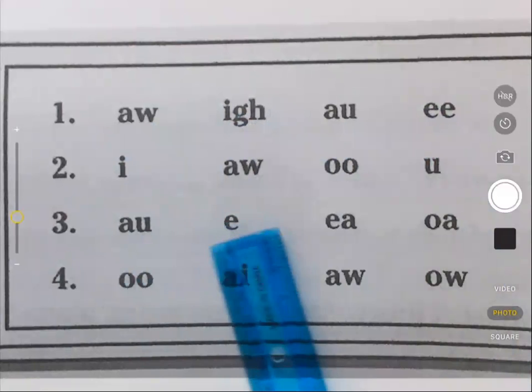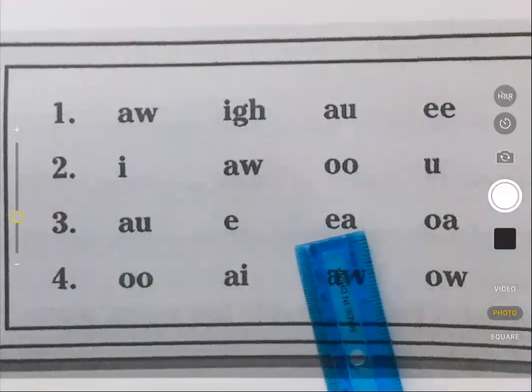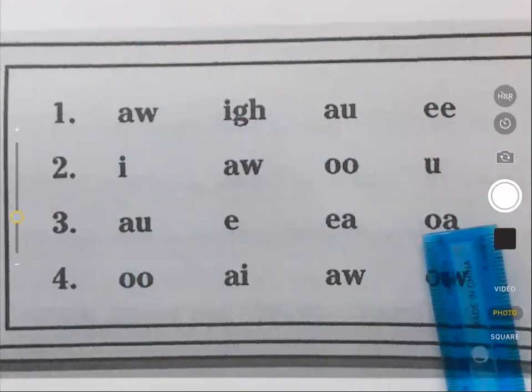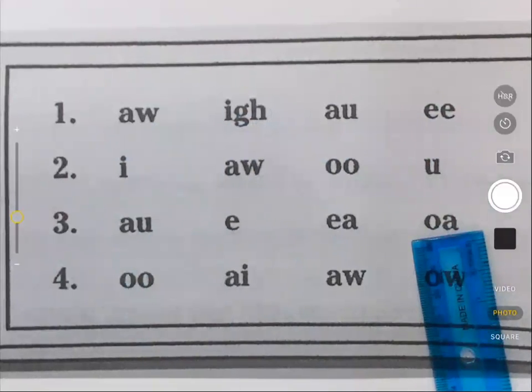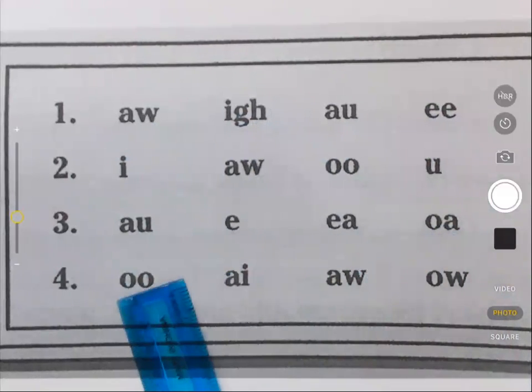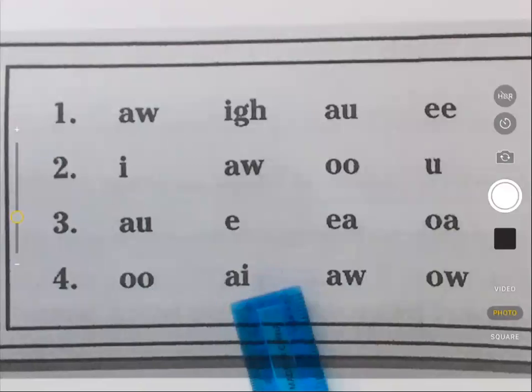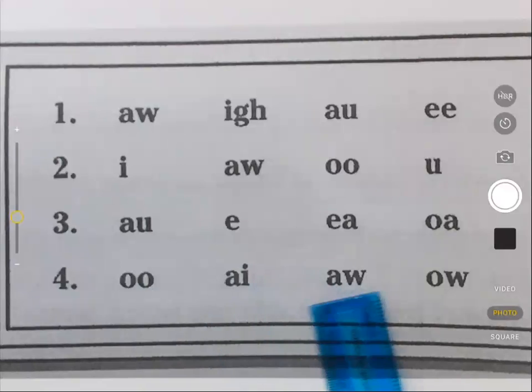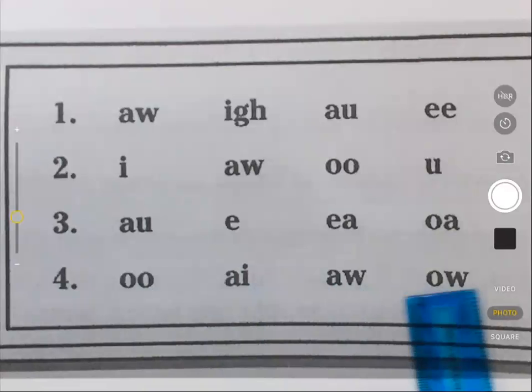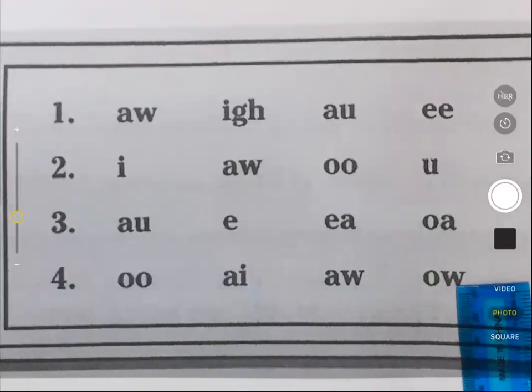Next line: au, e, ea, oa. And last line: oo, ai, aw, ow. Good.